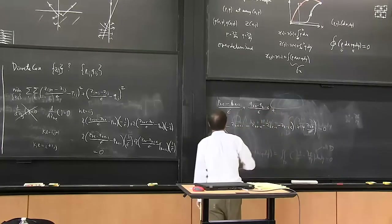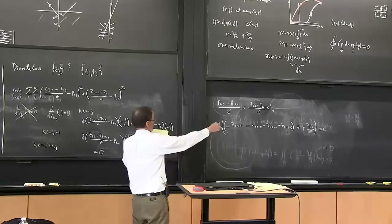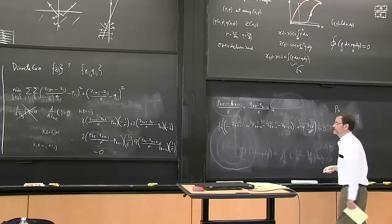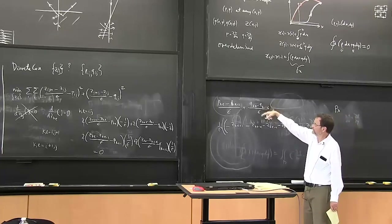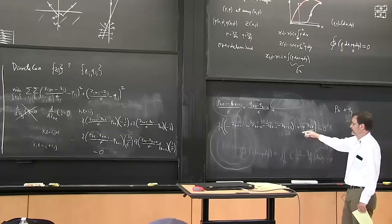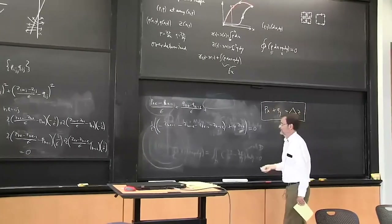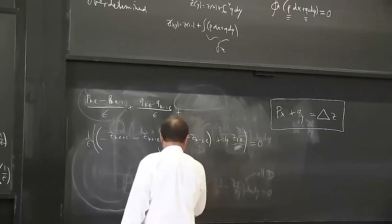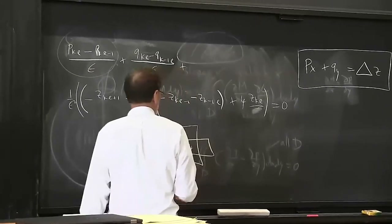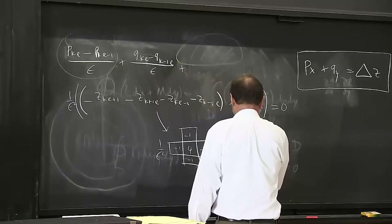So what are those terms? This looks awfully like the X derivative of P - we take the value of P at two positions separated in X and divide by epsilon, so we can think of this as P_x. And this looks awfully like the Y derivative of Q - Q_y. And this thing here corresponds to the Laplacian of Z. Gathering up all these terms, I get 1/epsilon^2 and I have 4 for the center kl and then minus 1 for all of the neighbors.